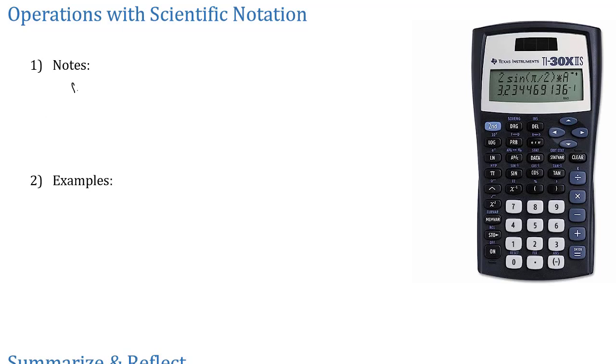For our calculator, when we want to do the times 10 to some power, what we're going to use is the second button on our calculator. And then we're going to hit the EE, which is the button on it that says x to the negative 1 power. So on my calculator here on the right, we're hitting the second button, and then this x to the negative 1 EE will give us that times 10 to the power of.